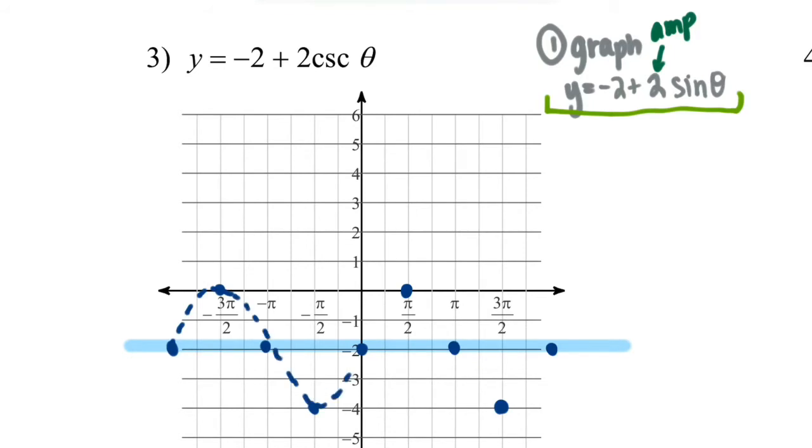And now I'm going to continue that pattern. And there's my sine curve. Now I'm doing a dashed line because it's not the sine curve that I really want to graph. I'm given the task of graphing cosecant.